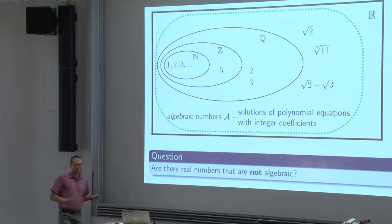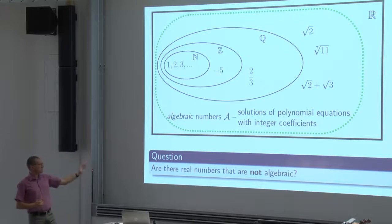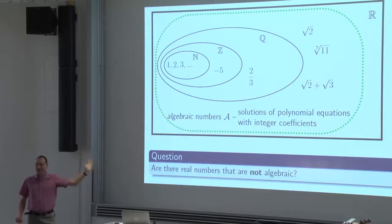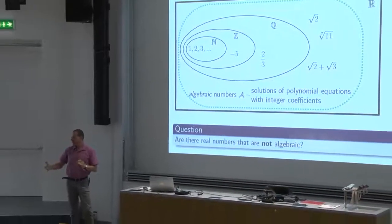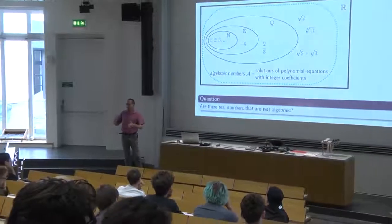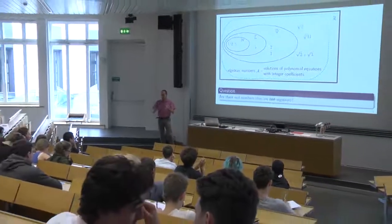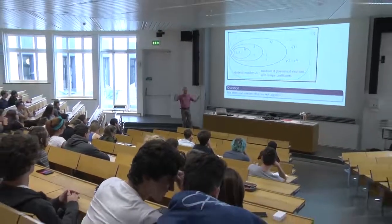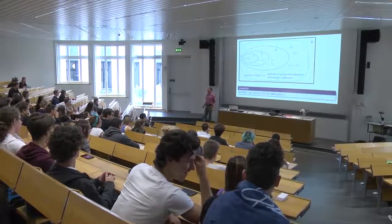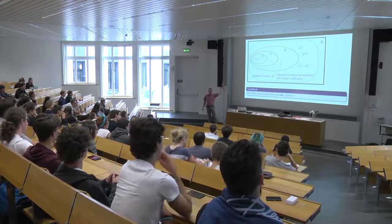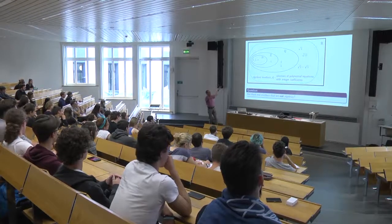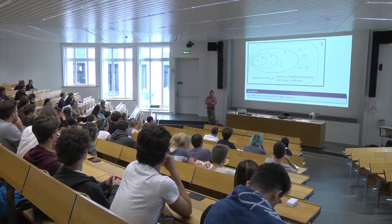The goal of the talk is to answer this question: are there real numbers that are not algebraic? Or is it the case that every real number, after you raise it to some powers and do some algebraic manipulations, is a solution of a polynomial equation with integer coefficients? Are there real numbers that fall outside of this green shape, or does the green shape exhaust all the real numbers? That will be our main question.